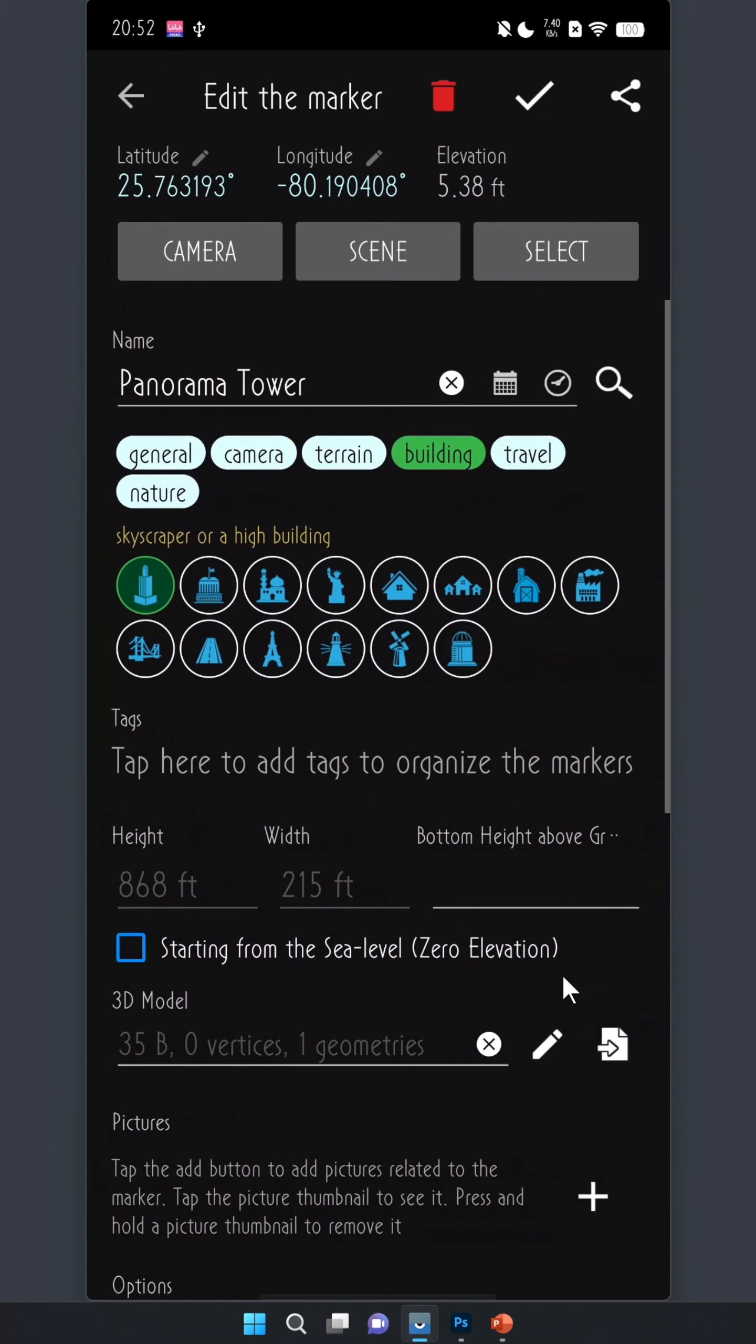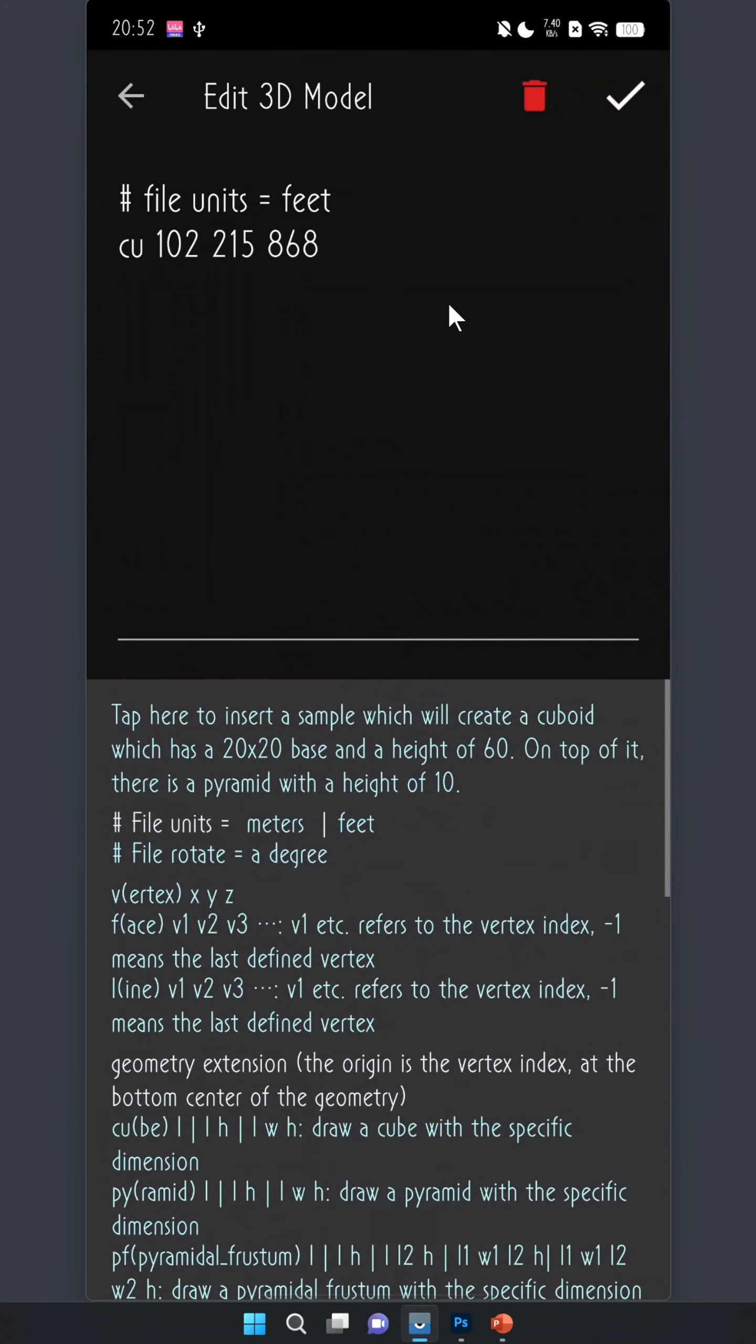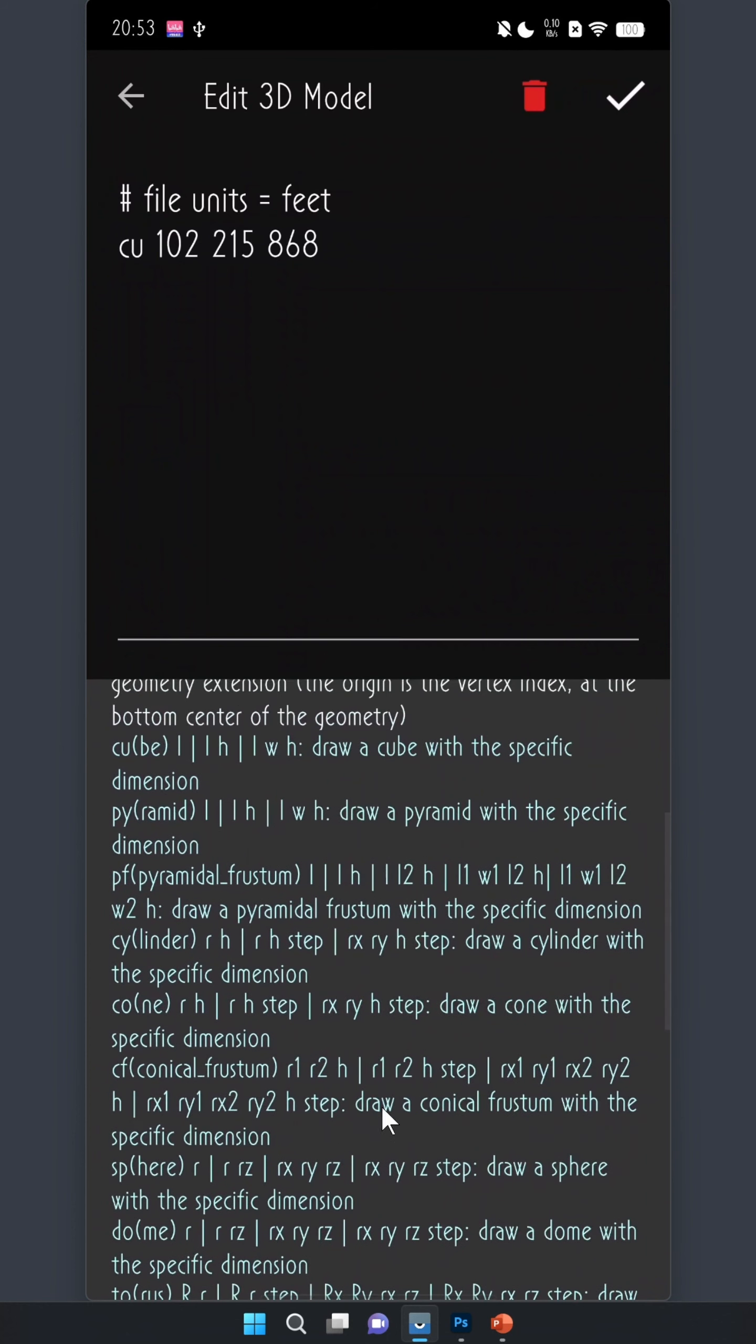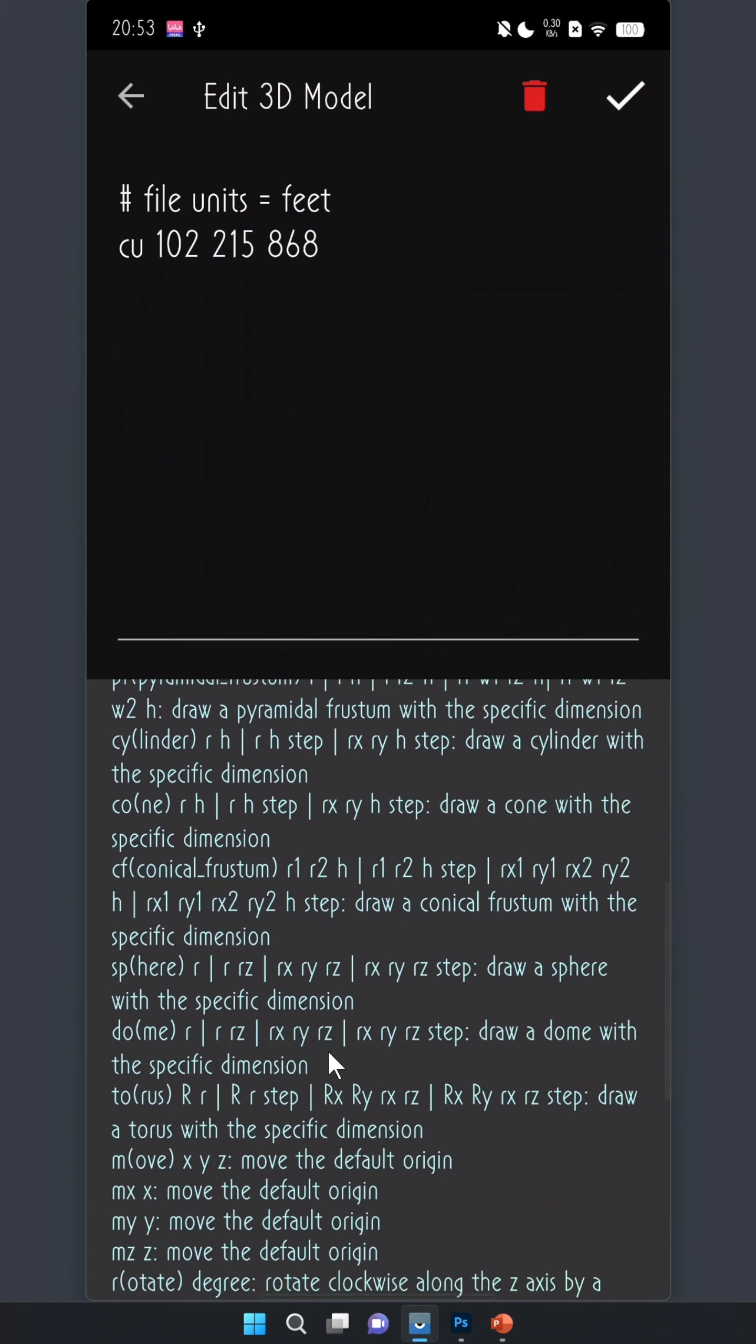Now in the last video I showed you how to create a cube shape for the panorama tower using a single command like this. But you're probably wondering what about other shapes? Well we put some descriptions here just as a reference but it's hard to learn just from that so we've prepared this video to teach you how the whole process works.